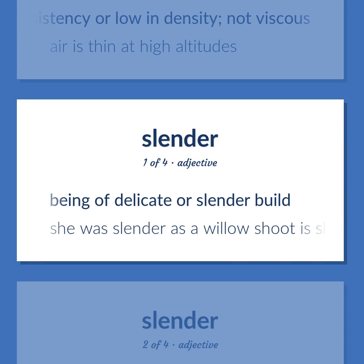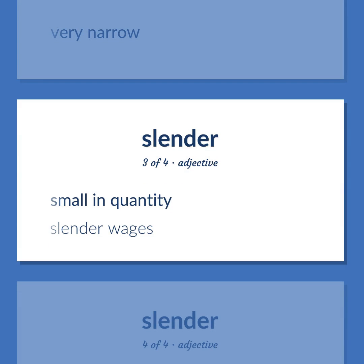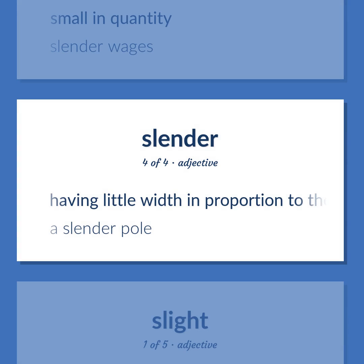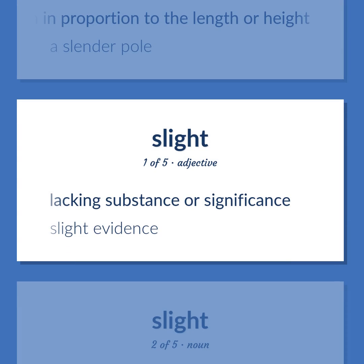Slender. Definition: Being of delicate or slender build. Example: She was slender as a willow shoot. Definition: Very narrow. Definition: Small in quantity. Example: Slender wages. Definition: Having little width in proportion to the length or height. Example: A slender pole. Definition: Lacking substance or significance. Example: Slight evidence.